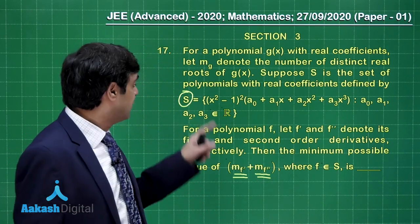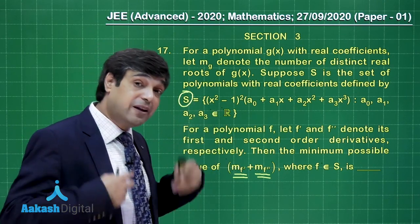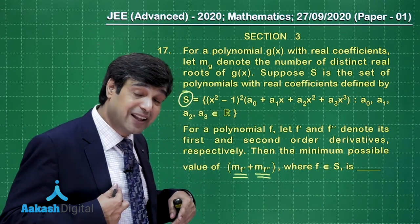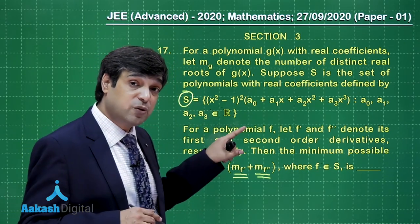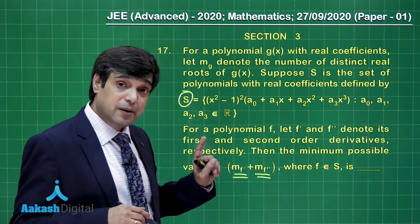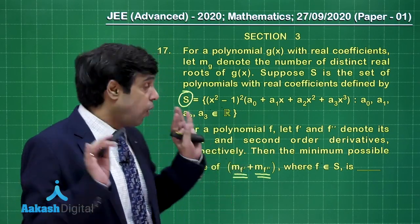What that says? Since we have end values at minus 1 and 1 both equal, so derivative will have at least one root in the interval minus 1 to 1. Now derivative is also having same value 0 at minus 1 and 1, meaning its second derivative will have at least one root in that interval. Is that clear?